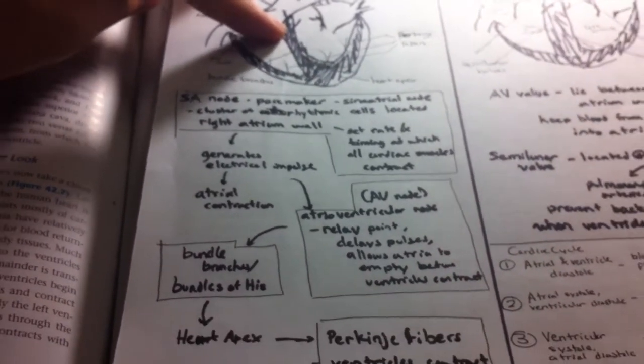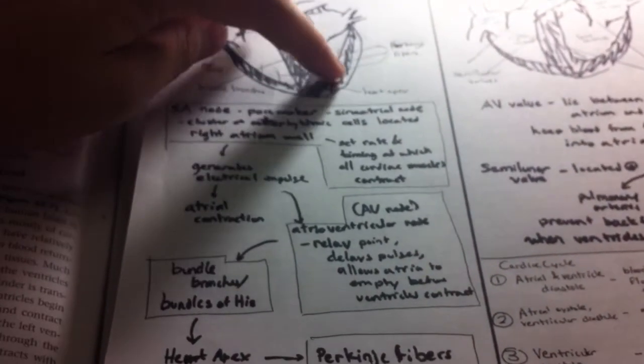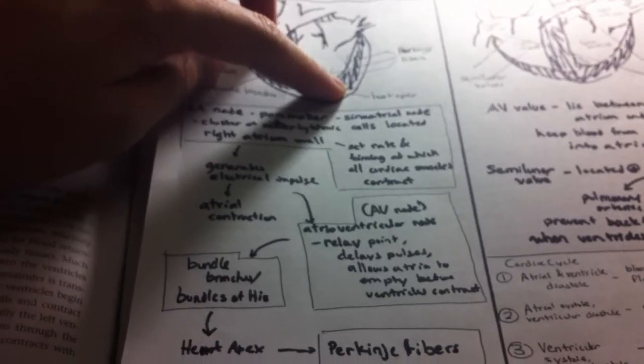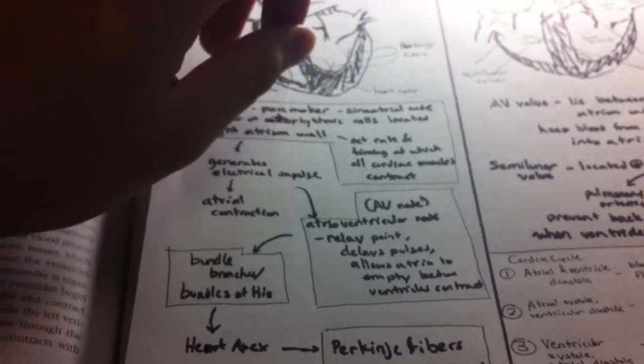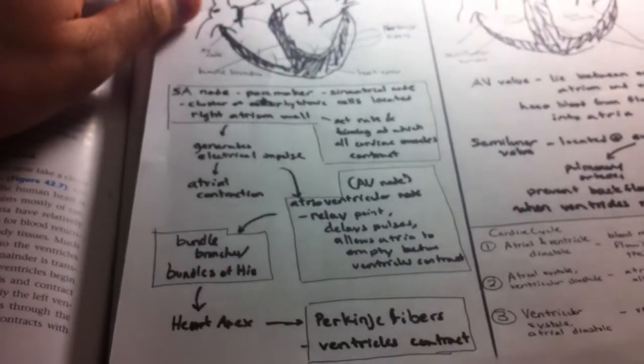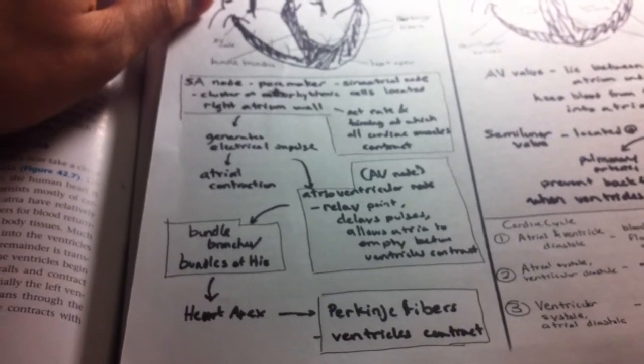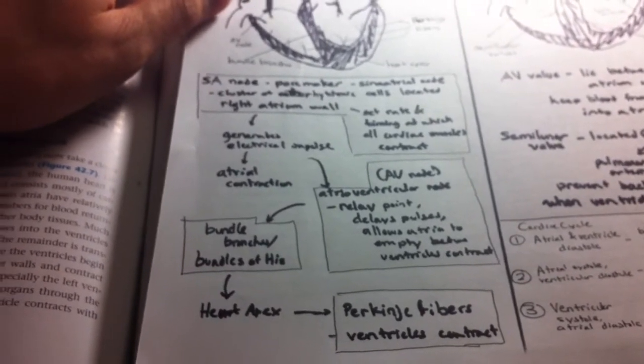After the bundles of His, we go to the heart apex located right here where the electrical impulse will vibrate throughout the entire heart and cause the ventricles to contract with the Purkinje fibers.